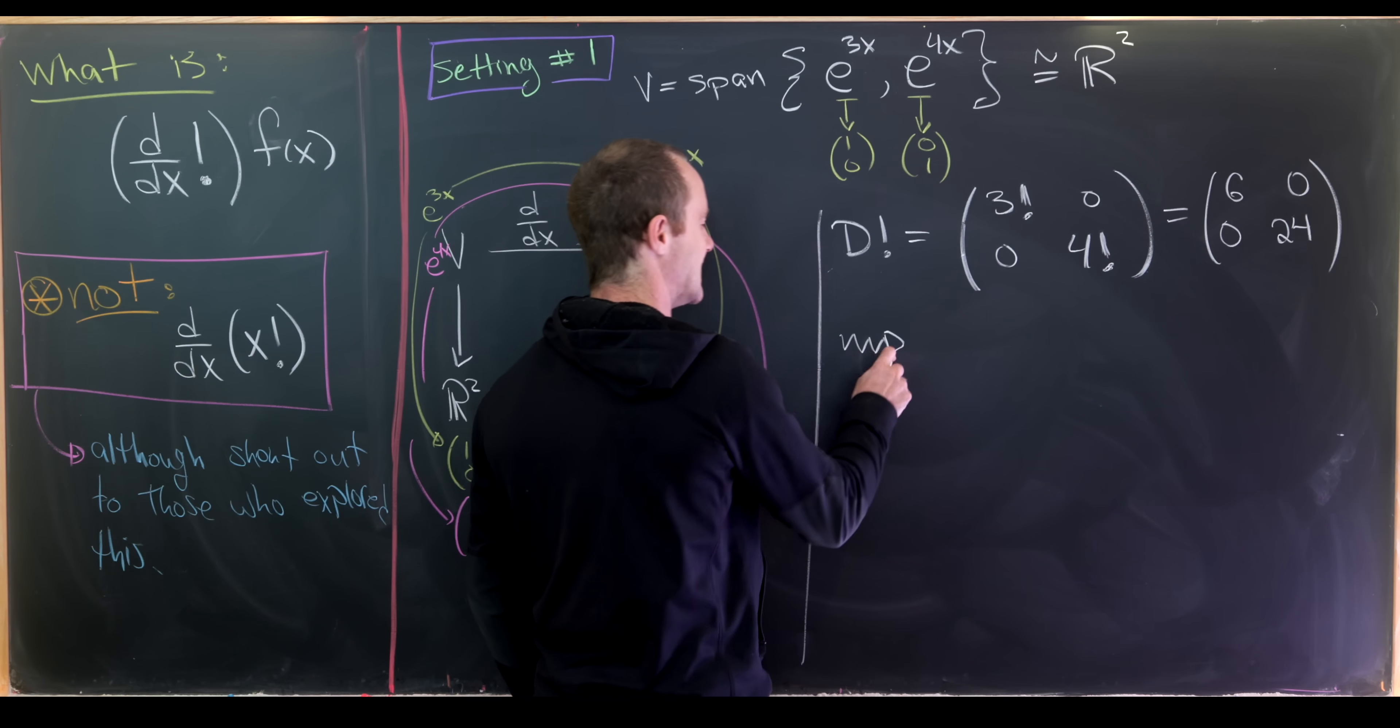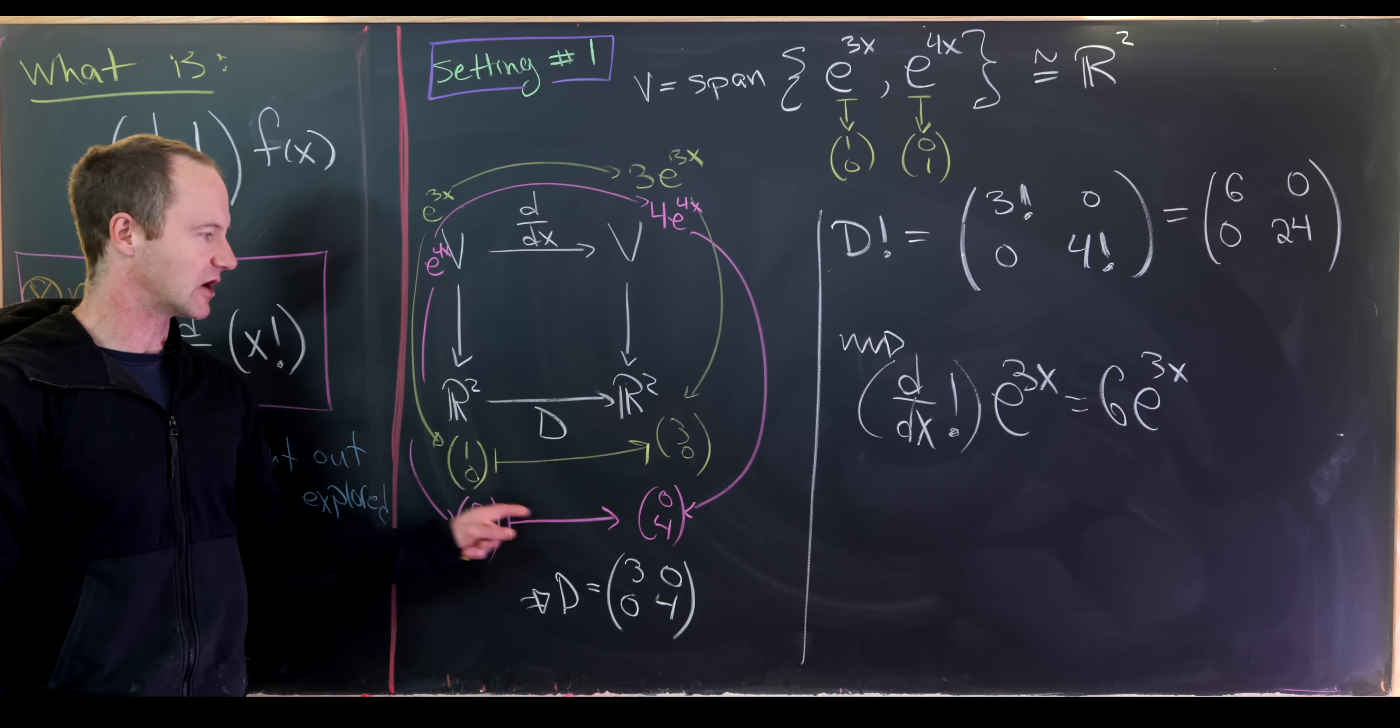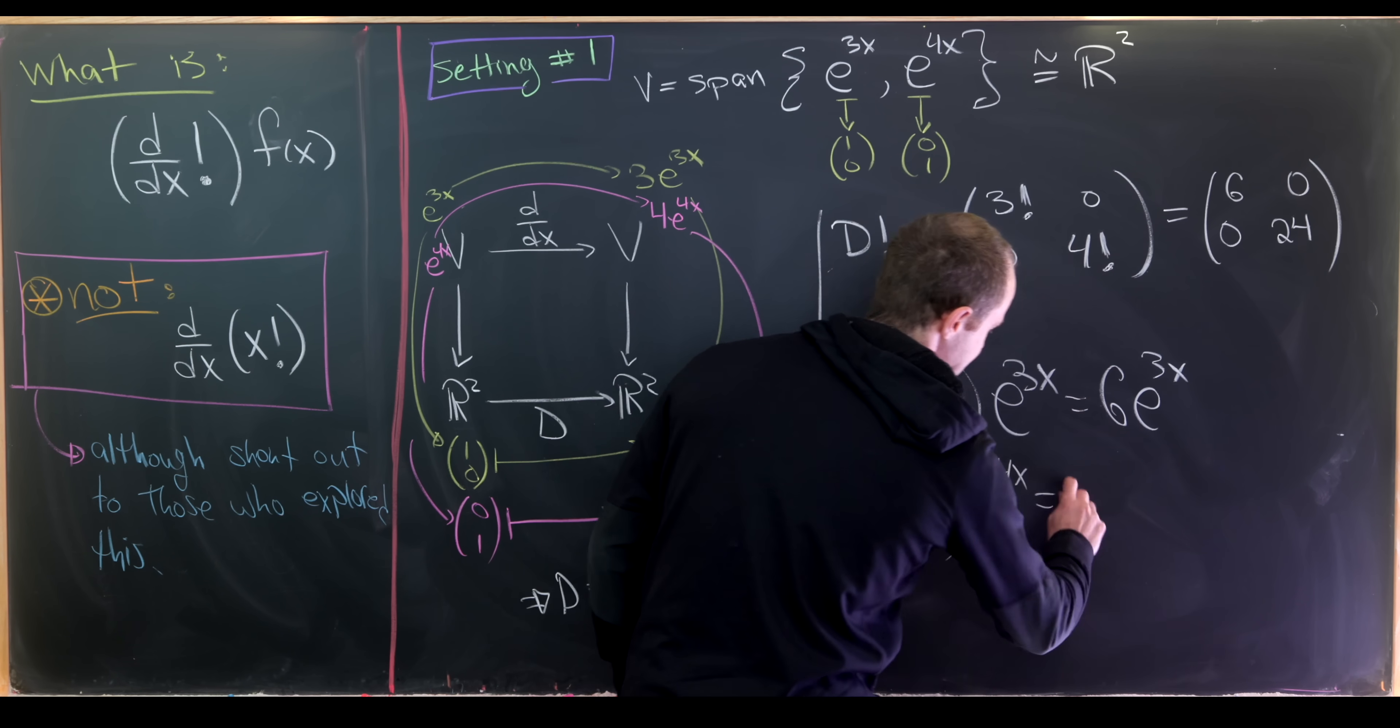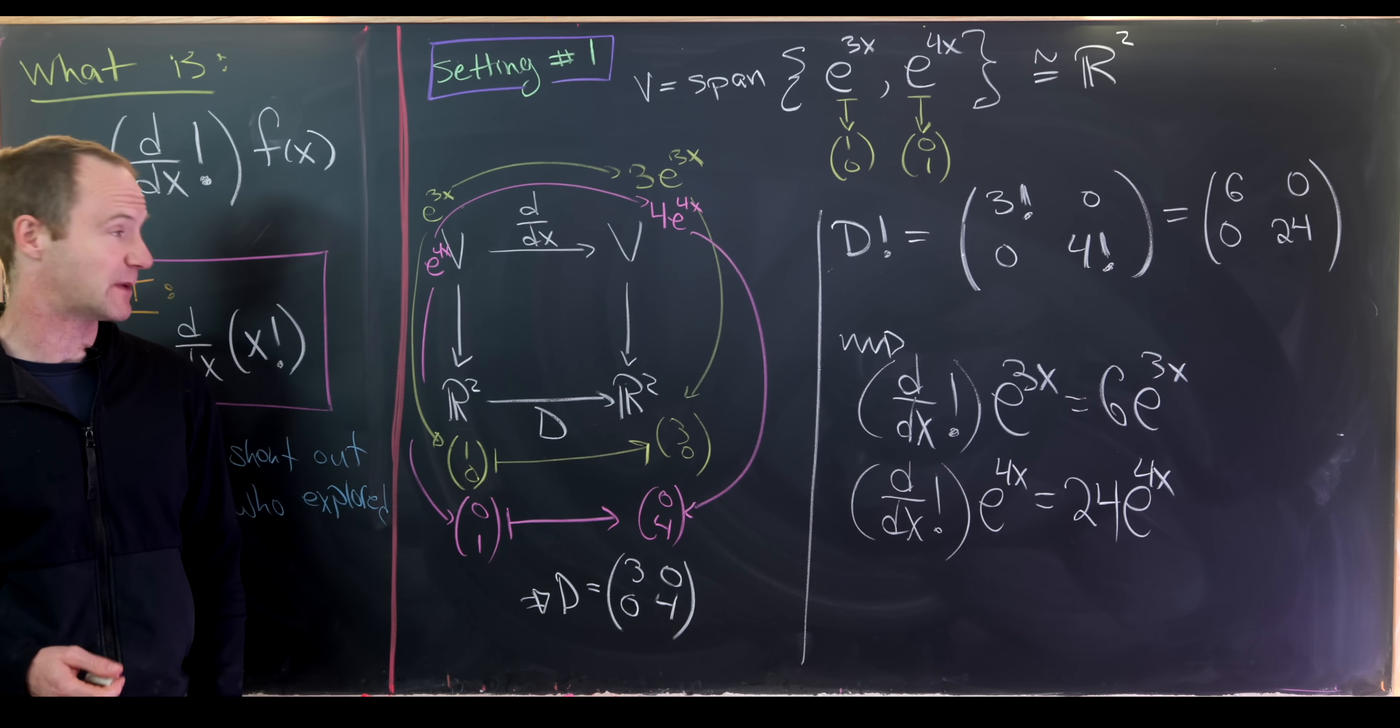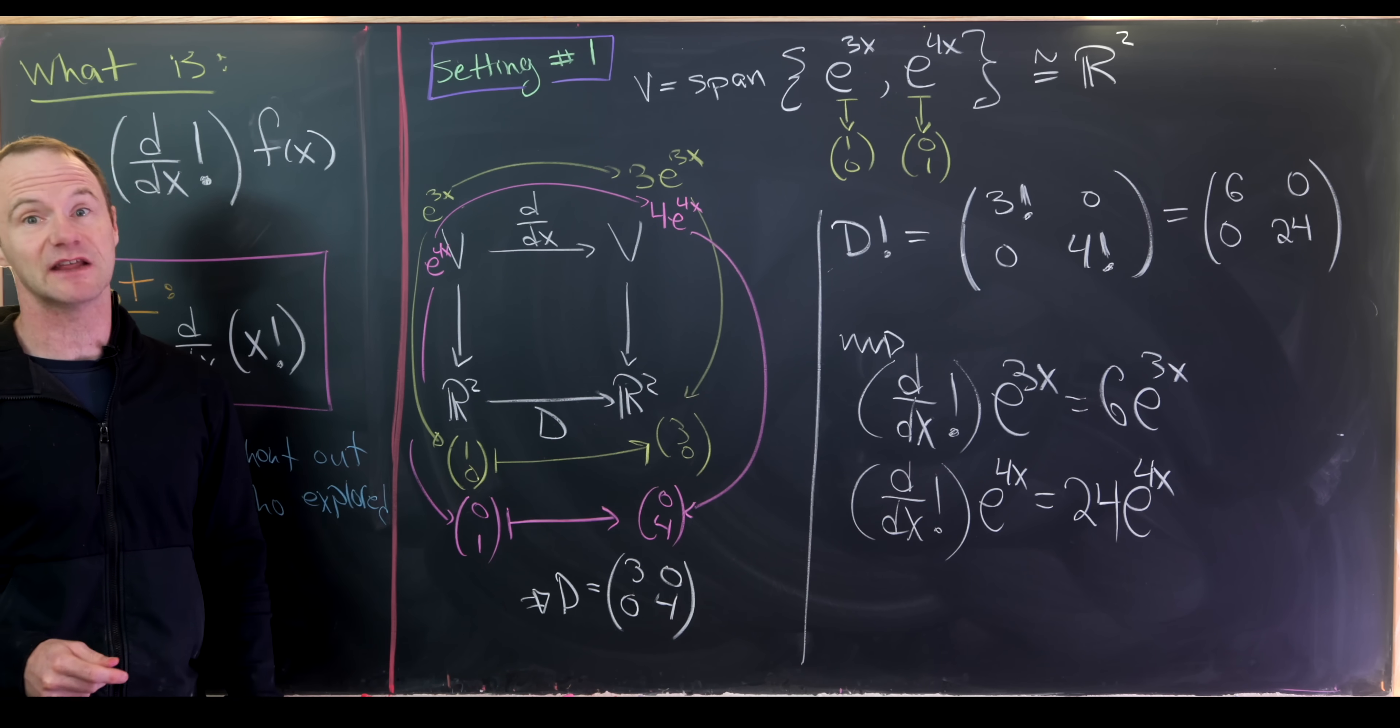And so it stands to reason that in this setting, if we were to take the factorial of the derivative operator and operate on e to the 3x, we would get 6e to the 3x. Just by building a diagram that's very similar to this. And furthermore, if we were to take the factorial of the derivative function and apply it to e to the 4x, it seems like we'll get 24e to the 4x. But this case is very specialized in that the derivative is already diagonalized with the choice of our basis for our vector space V. So let's maybe look at a case when it's not only not diagonalized, but not even diagonalizable.